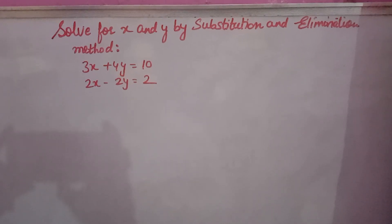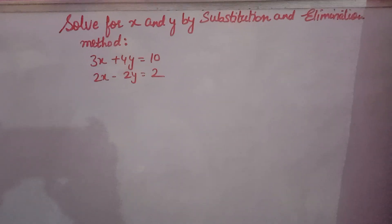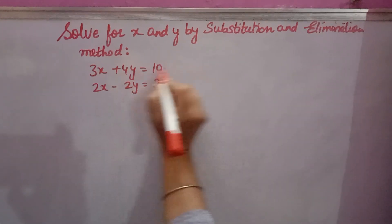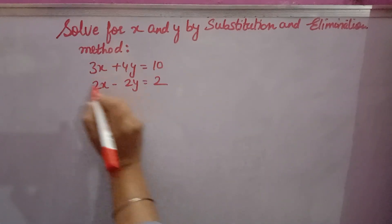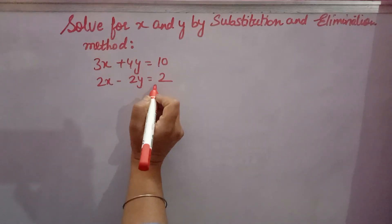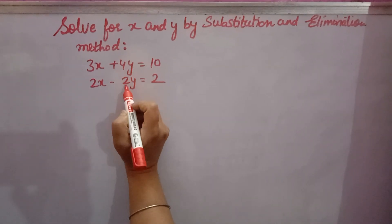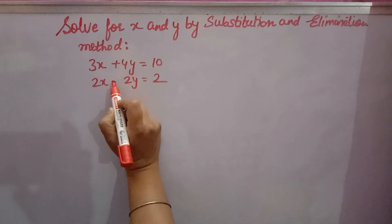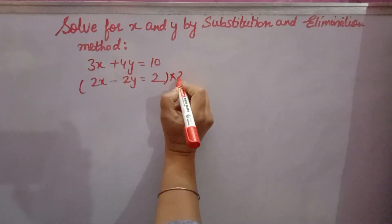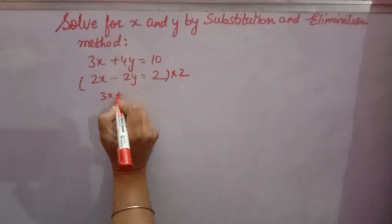We will solve for x and y by substitution and elimination method. Doing the elimination method first: the first equation is 3x plus 4y is equal to 10, and the second is 2x minus 2y is equal to 2. See carefully — in the second equation, 4y is there in the first, and 2y is there with a minus sign. So multiply the second equation by 2.